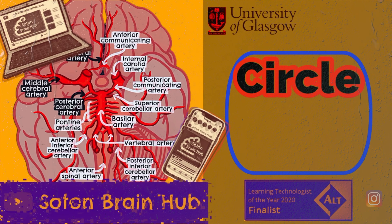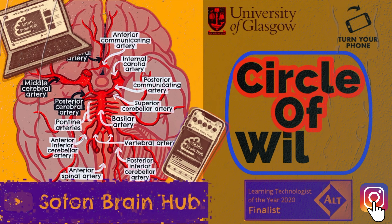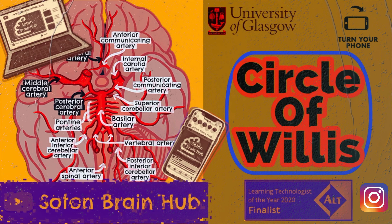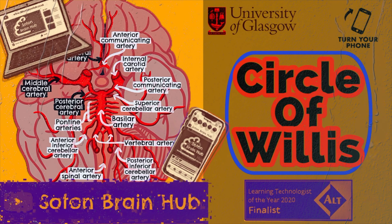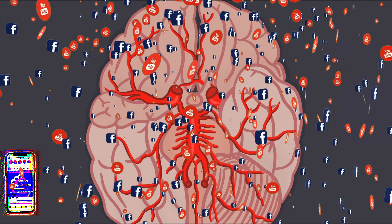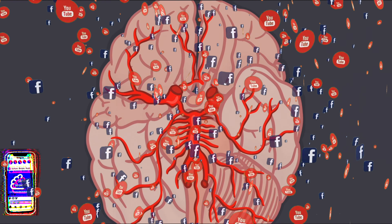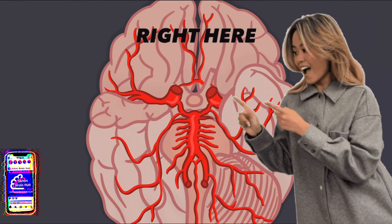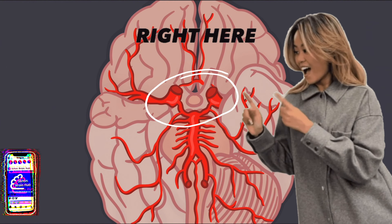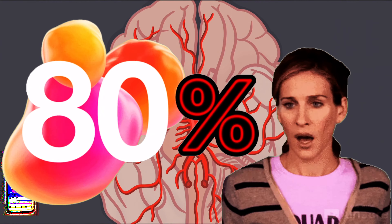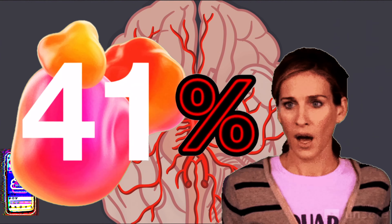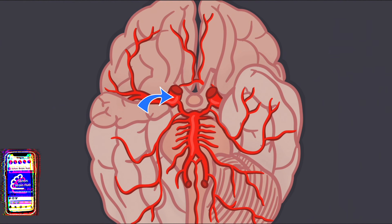Hello and welcome to another Sutton Brain Hub video. My name is Charlie and today I'll be taking you through the important arterial structure, the Circle of Willis. The Circle of Willis is an important arterial junction on the inferior aspect of the brain, supplying blood to over 80% of the brain and arising from the two internal carotid arteries.